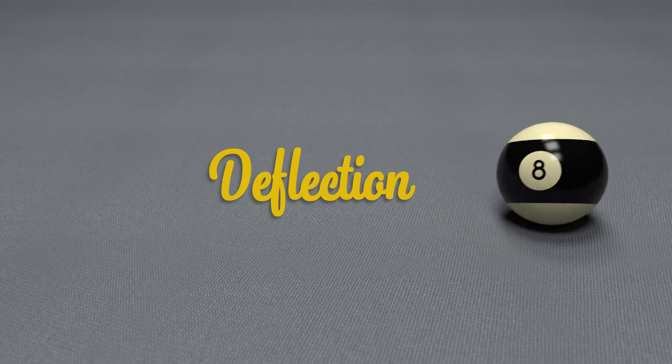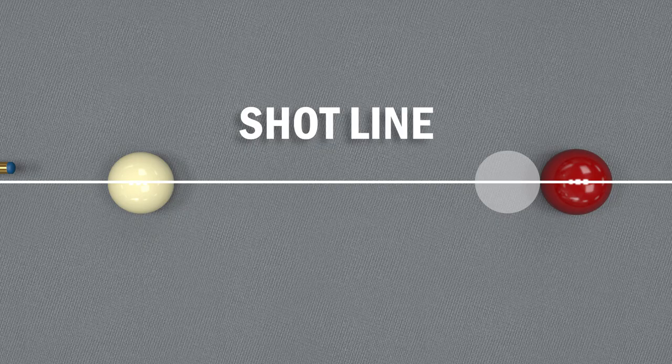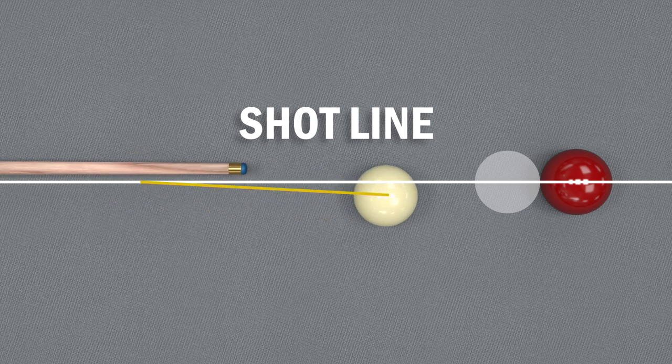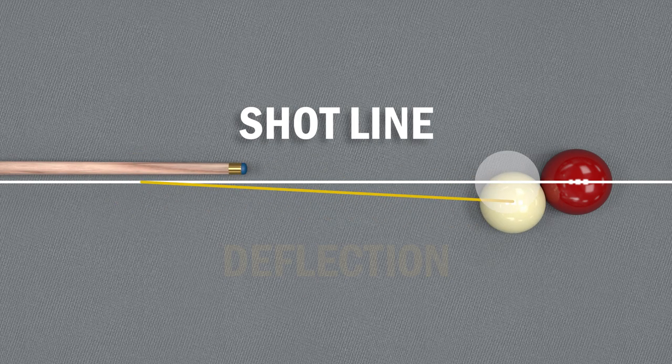In this video we're going to be looking at deflection. When we play a shot with sidespin the cue pushes the cue ball off the original shot line, and this is called deflection.